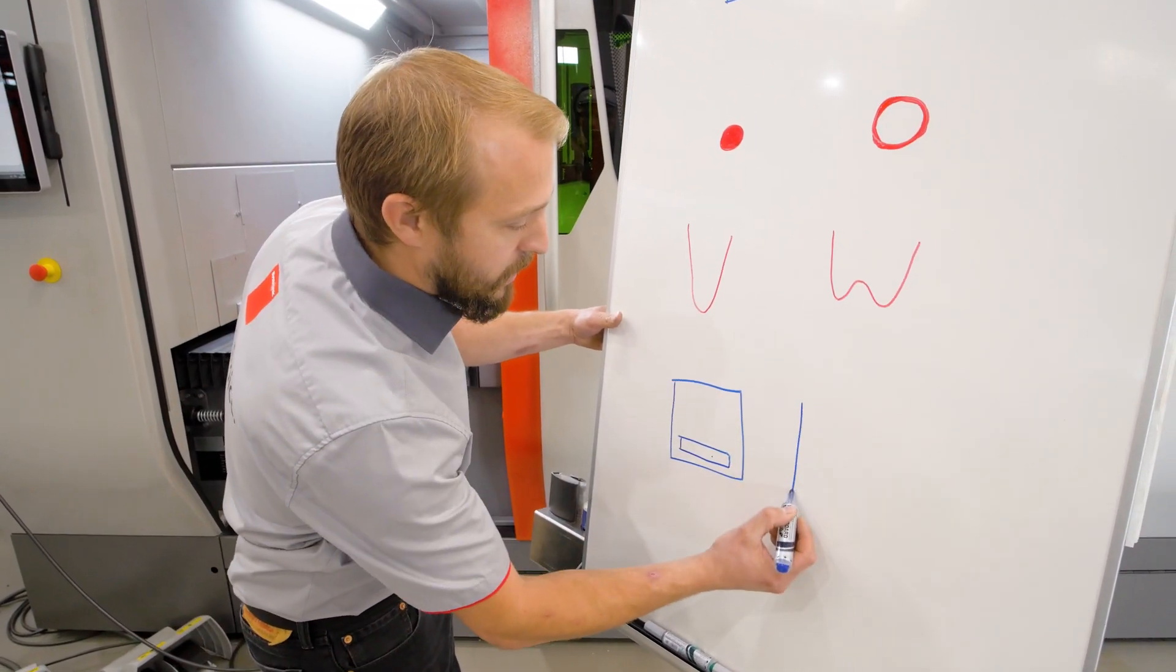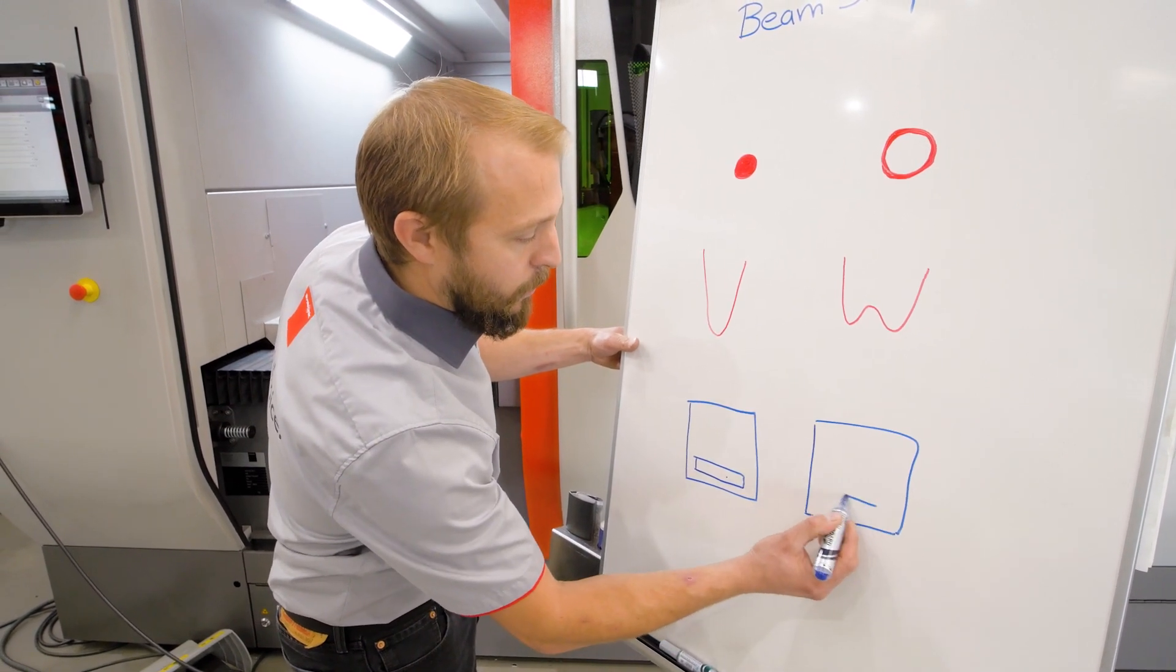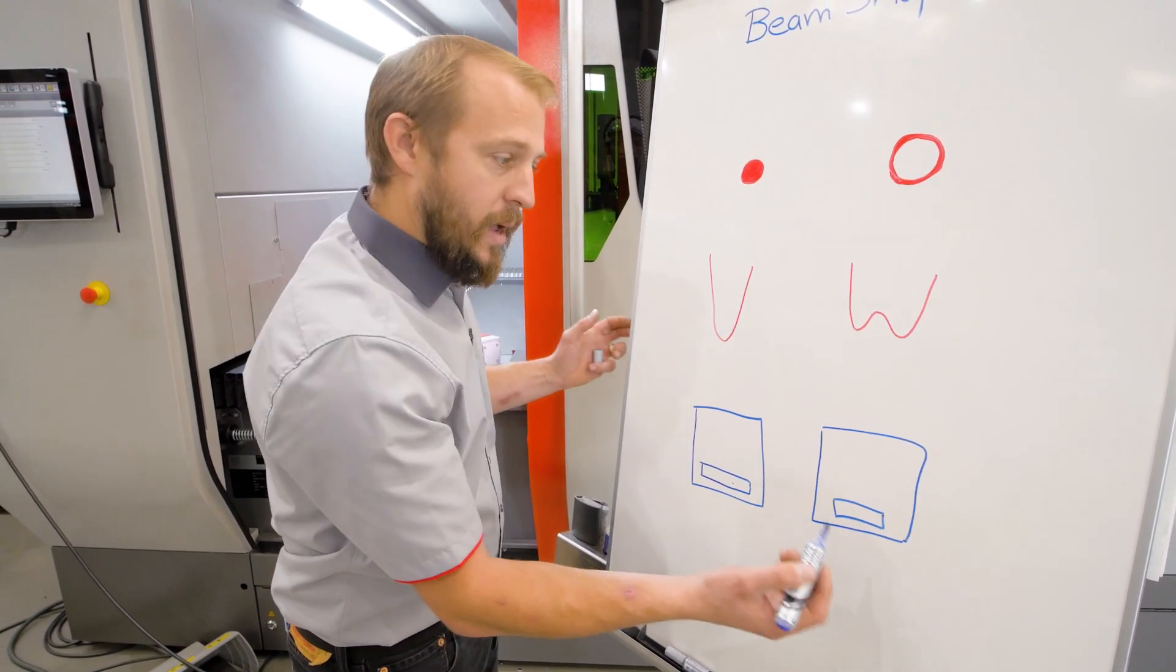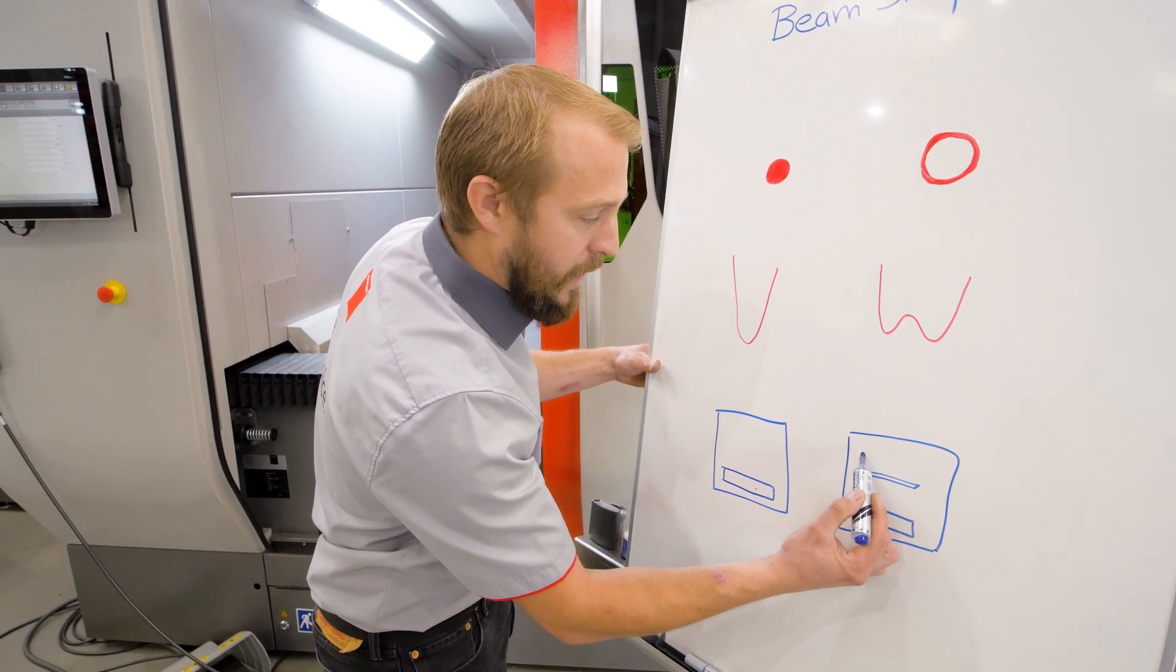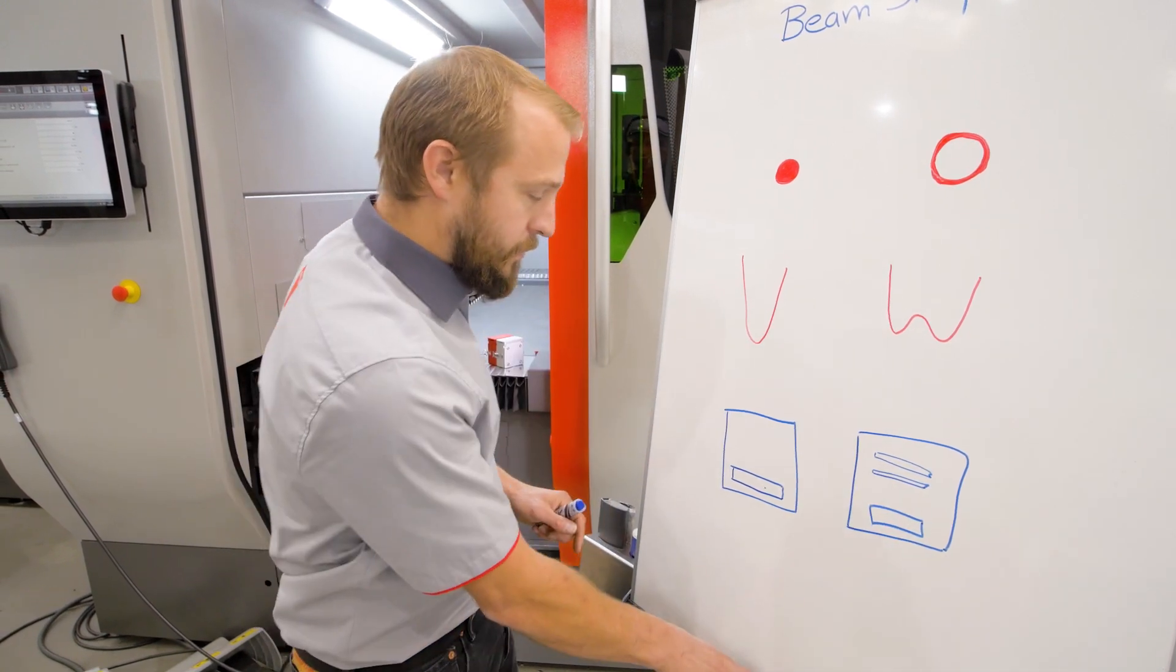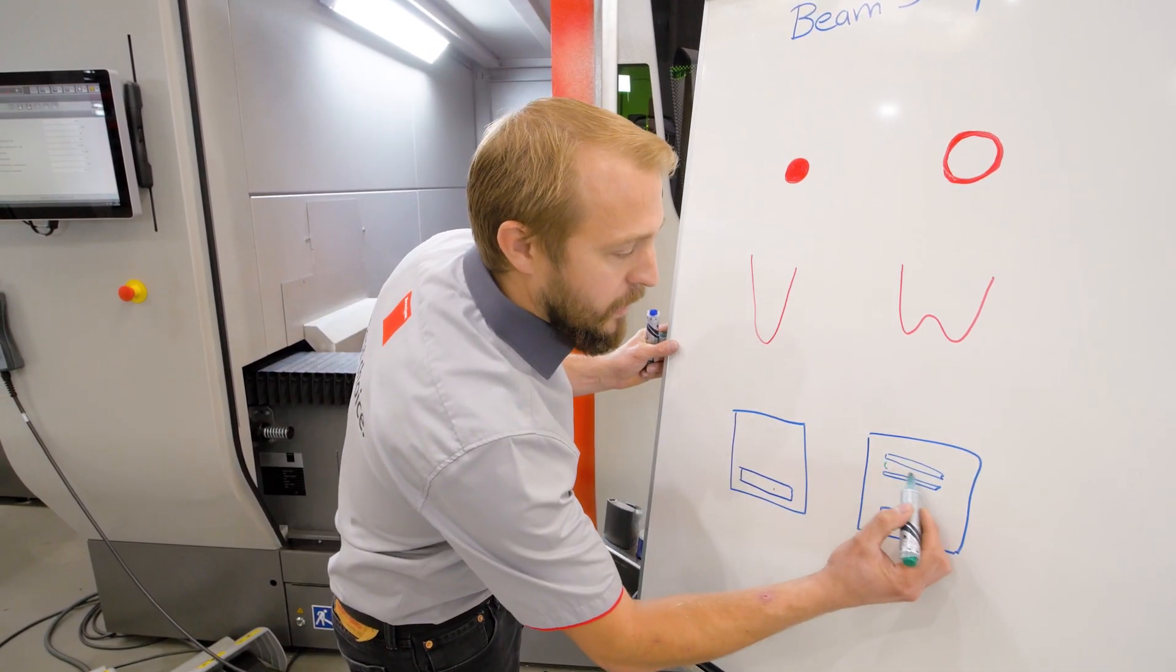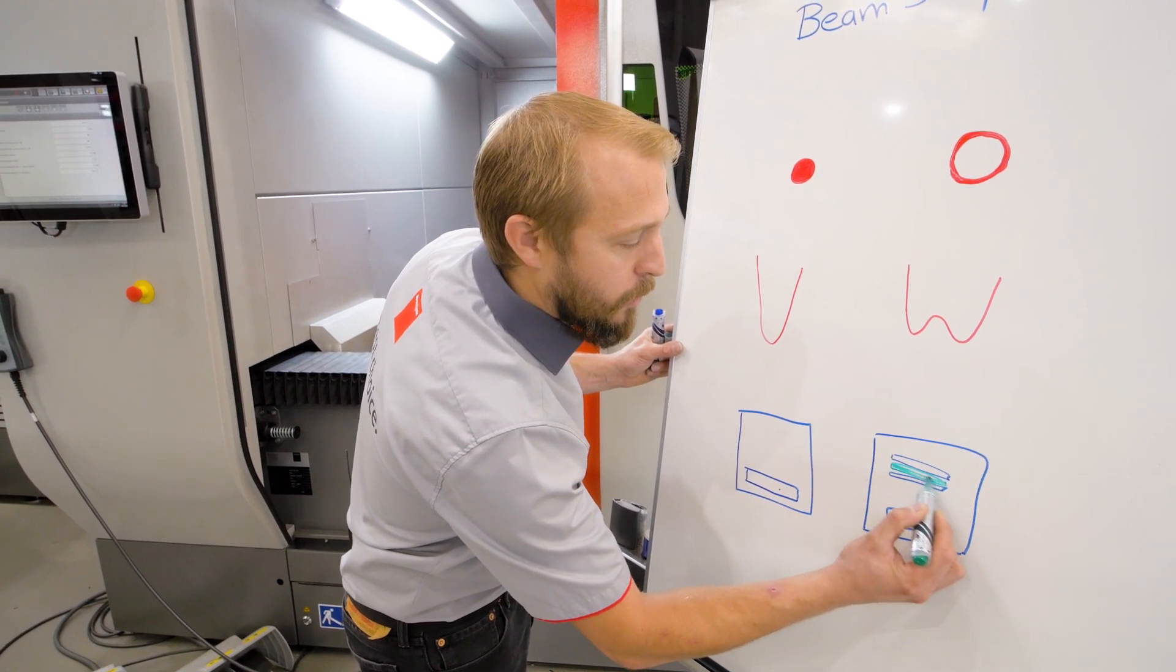With beam shaper, we have in the similar carriage a protective glass, and then a second small protective glass, and a third small protective glass. And finally, between those two protective glasses, our beam shaper.